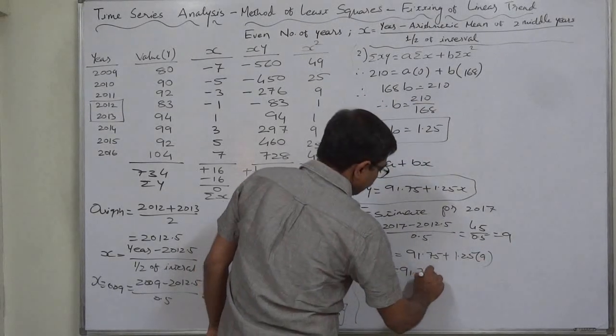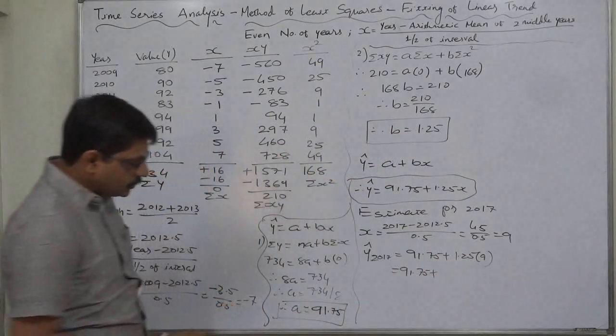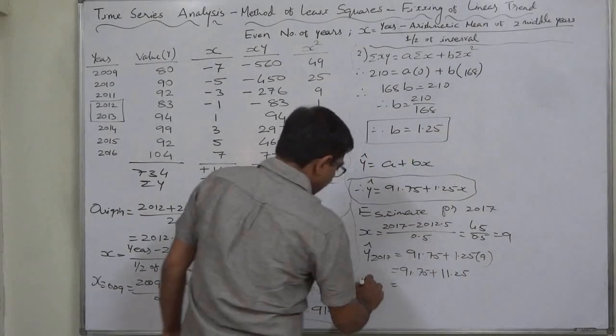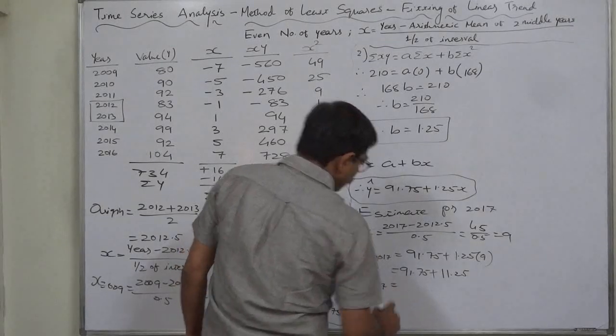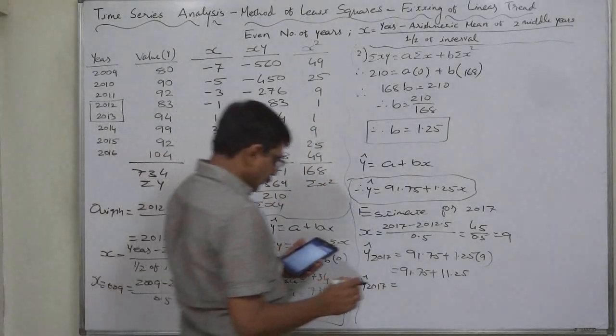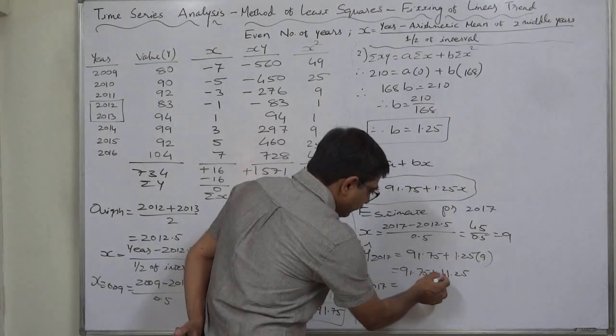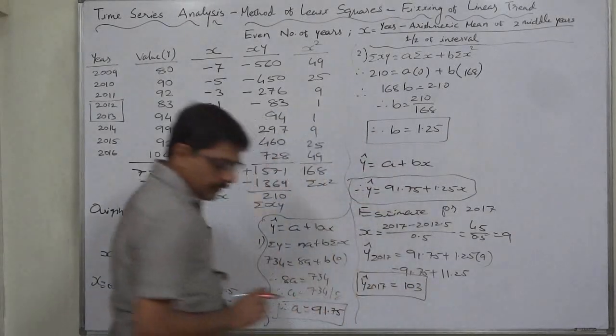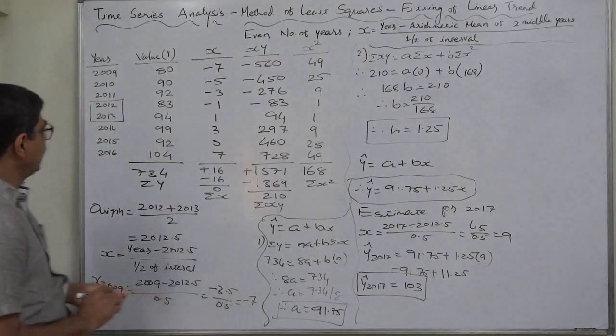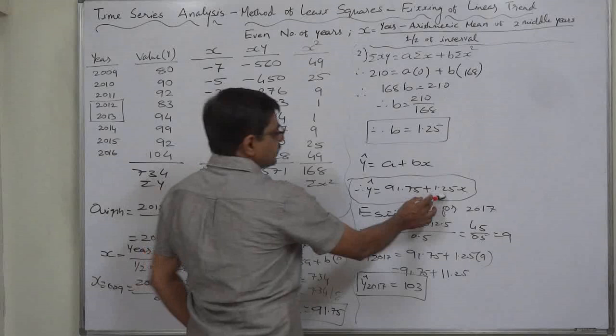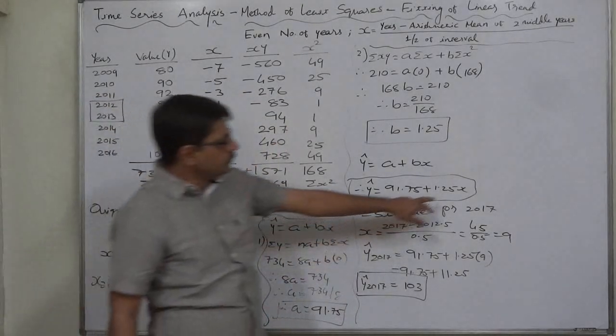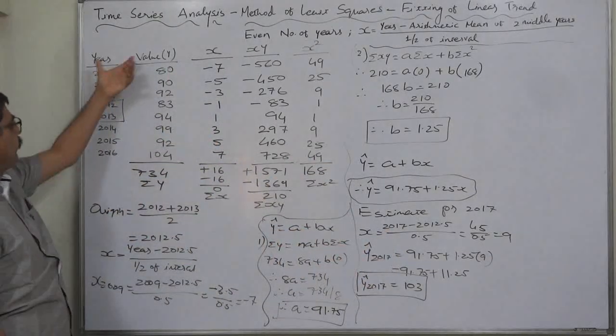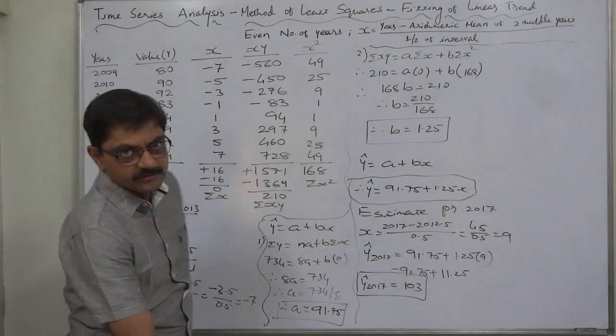Estimated value of Y for the year 2017 is 91.75 plus 1.25 into 9. That is 91.75 plus 1.25 into 9 is 11.25, so estimated value of Y for the year 2017 is 91 plus 11 is 102 plus 1 is 103. Now it is your assignment to find out the trend values of all eight years on the basis of this straight line equation. You just need to substitute value X for each and every year. The result will be estimated value of Y for all these years, and they are known as trend values.